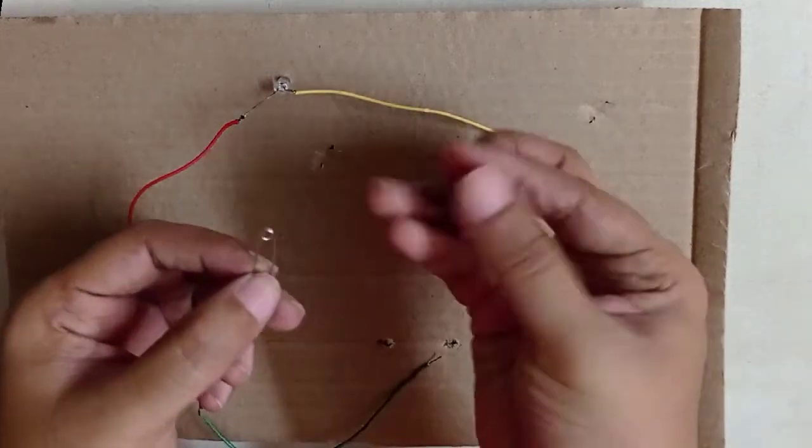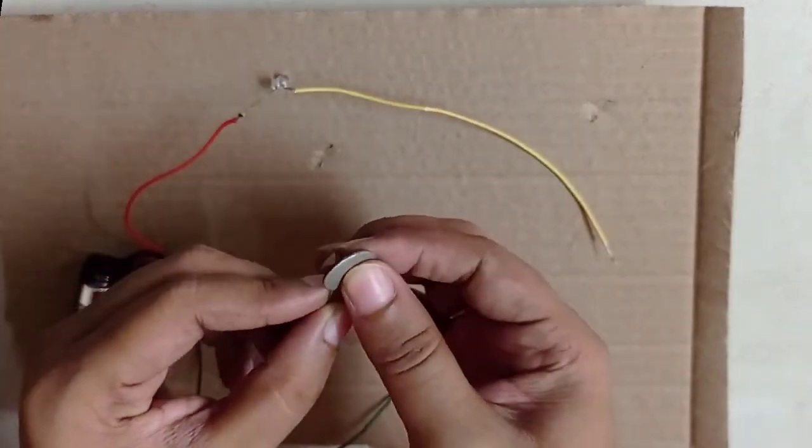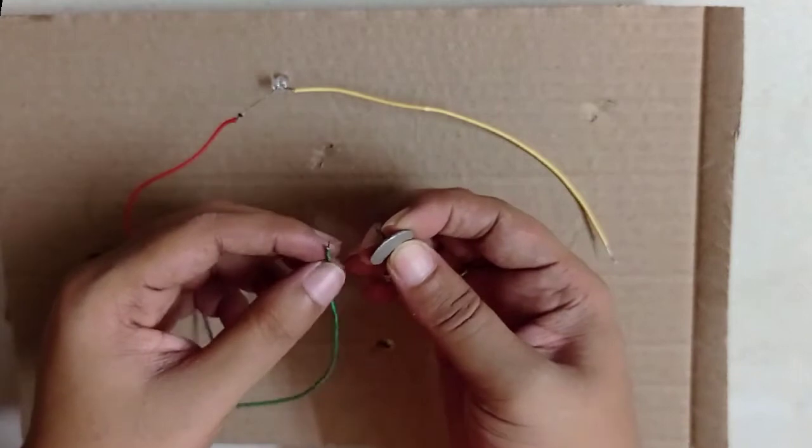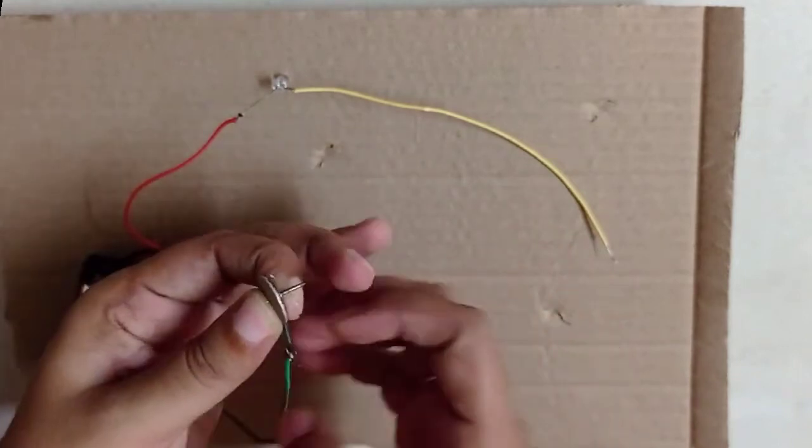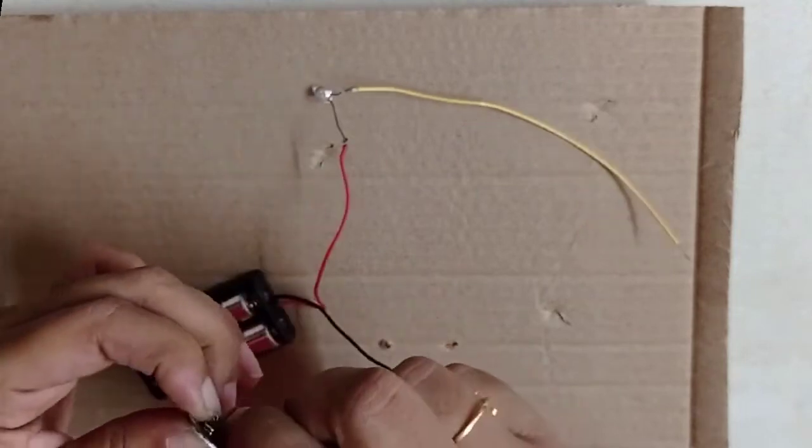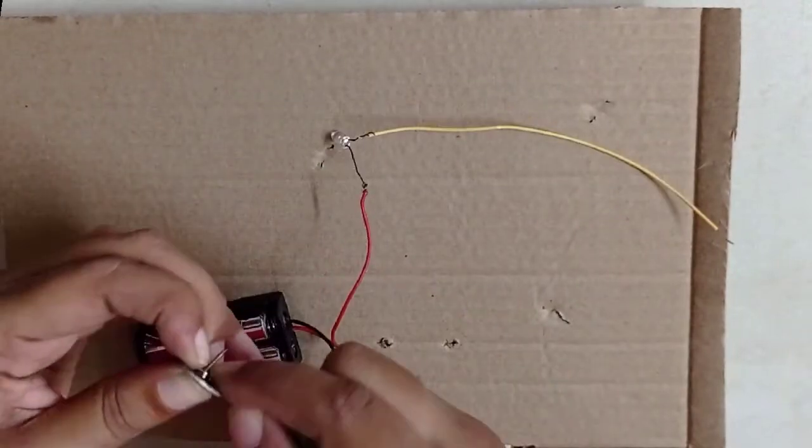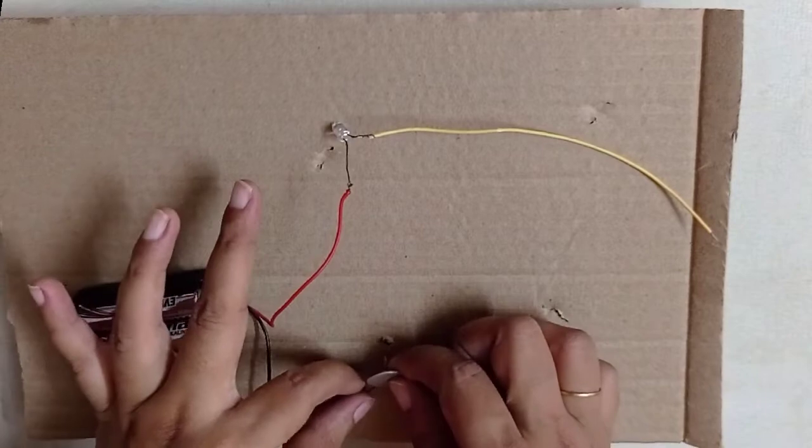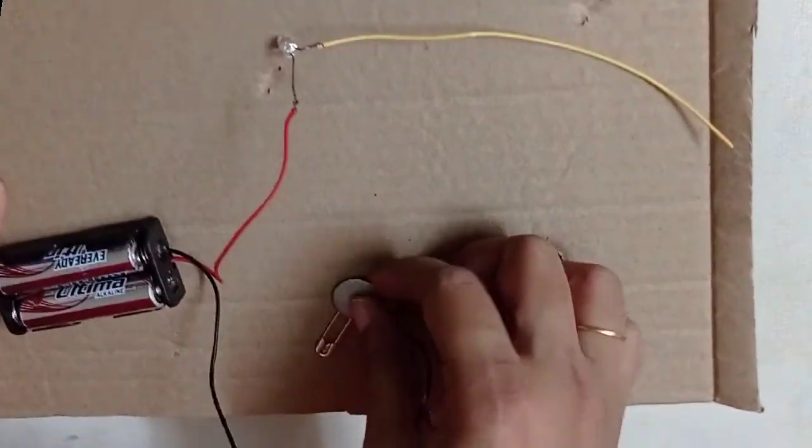Take a safety pin and insert this drawing pin at one end of it. We have to connect this wire to this drawing pin. Insert this drawing pin in one of the holes which we have made.